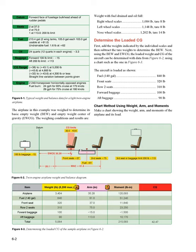Next, using the EW and EWCG, the loaded weight and CG of the aircraft can be determined with data from Figure 6-2, using a chart such as the one in Figure 6-3.